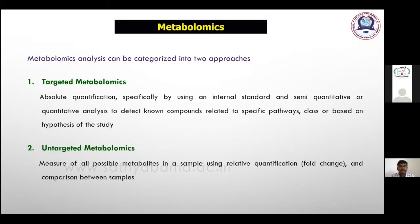Nowadays a lot of instruments are available for metabolomic analysis. Starting from gas chromatography and mass spectrometry, which is an excellent tool, LC-MS (liquid chromatography and mass spectrometry) is also there, and NMR (nuclear magnetic resonance). These are the major equipment useful for metabolomics analysis.